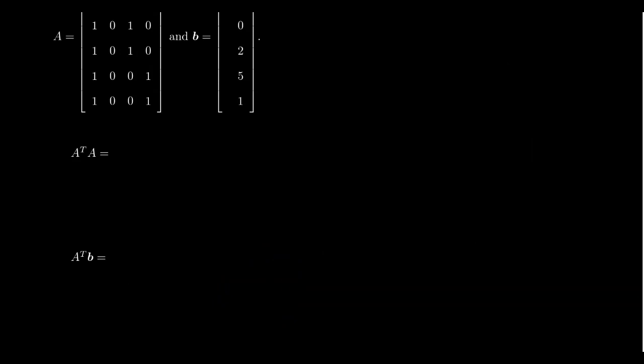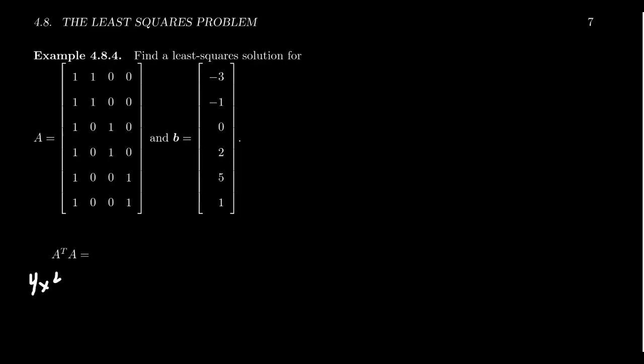As another example, let's consider this one. We have a 6 by 4 matrix A, and we want Ax to equal the vector b there. If you calculate A transpose A, you're going to have to take the transpose and multiply together. This will give you a 4 by 4 matrix, since you have 4 columns to begin with. I'm not going to go through the complete details this time. If you want to, you might want to pause the video and work it out yourself.